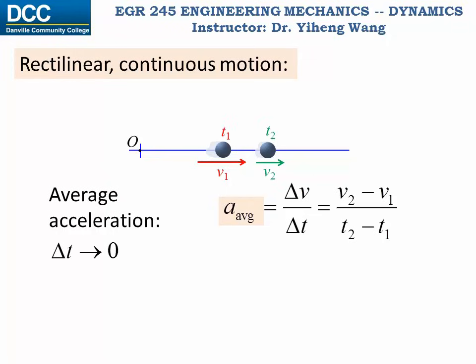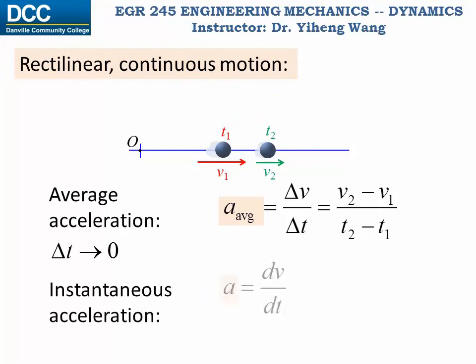And when the change in time delta t approaches zero, the average acceleration becomes the instantaneous acceleration, dv over dt, or the time derivative of the velocity.